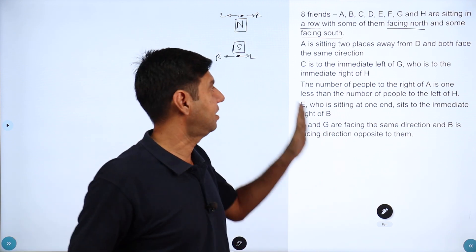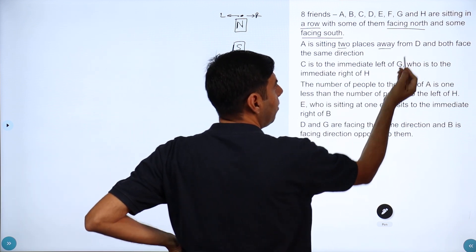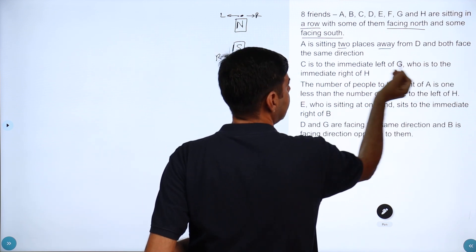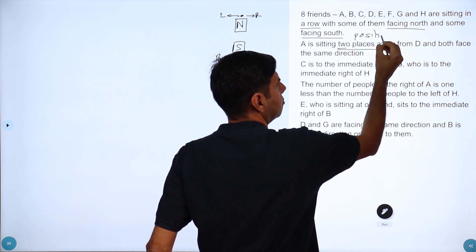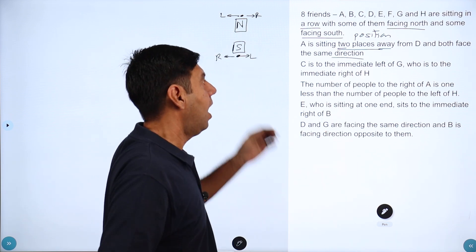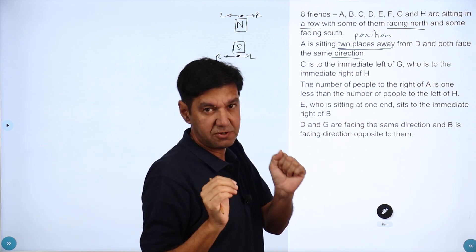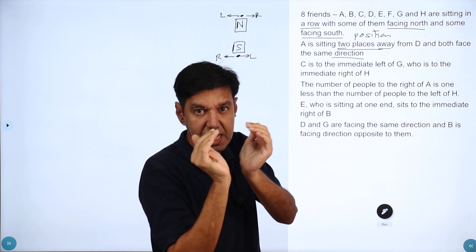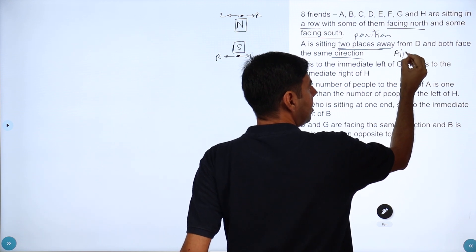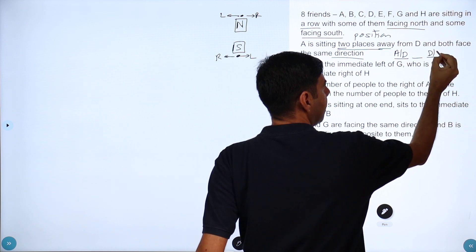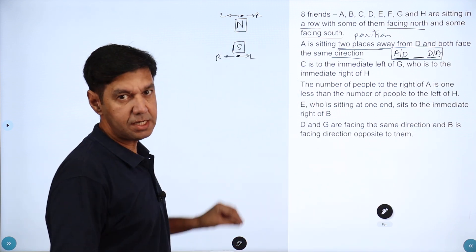A is sitting two places away from D — two places away, we don't know which side. Both face the same direction. So one clue is about position, and one is about direction. You can't do much individually, but treat them as a block. A very important part of solving sets is building blocks and then arranging them. So this block is: either A or D, then one empty place, then D or A — a block of three.